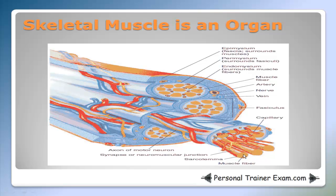Here is a picture of skeletal muscle. We have muscle fiber at the bottom, the fibrous connective tissue — epimysium, perimysium, endomysium — the nerve tissue shown in orange, and the blood vessels shown in red and blue.